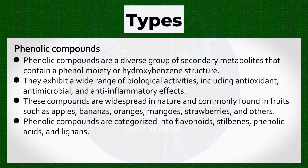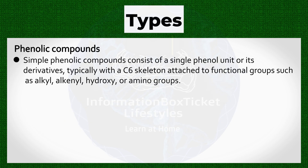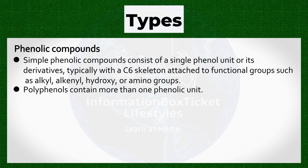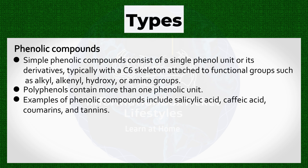Phenolic compounds are categorized into flavonoids, stilbenes, phenolic acids, and lignans. Simple phenolic compounds consist of a single phenol unit or its derivatives, typically with a C6 skeleton attached to functional groups such as alkyl, alkanol, hydroxy, or amino groups. Polyphenols contain more than one phenolic unit. Examples of phenolic compounds include salicylic acid, caffeic acid, coumarins, and tannins.